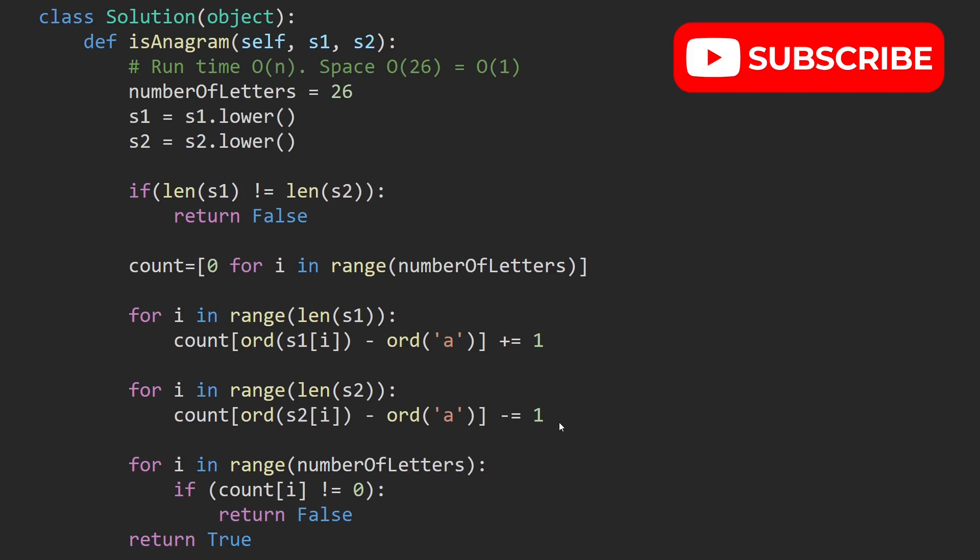At the end of the day, we loop through the count array, and if we find that one of the numbers is not 0, then we have to return false. And if we successfully loop through the count array and all the numbers in there are 0s, then we know for sure that s1 and s2 are anagrams, so we have to return true.